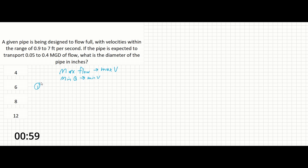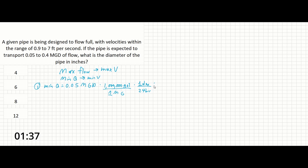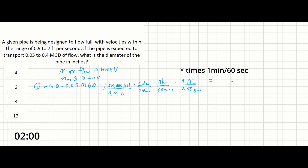First, we can convert our max flow and min flow from million gallons per day to CFS. Min Q equals 0.05 MGD times 1 million gallons over 1 MG, times 1 day over 24 hours, times 1 hour over 60 minutes, times 1 cubic foot over 7.48 gallons — which you can look up in the unit conversion section of the reference manual. This gives us 0.077 cubic feet per second.